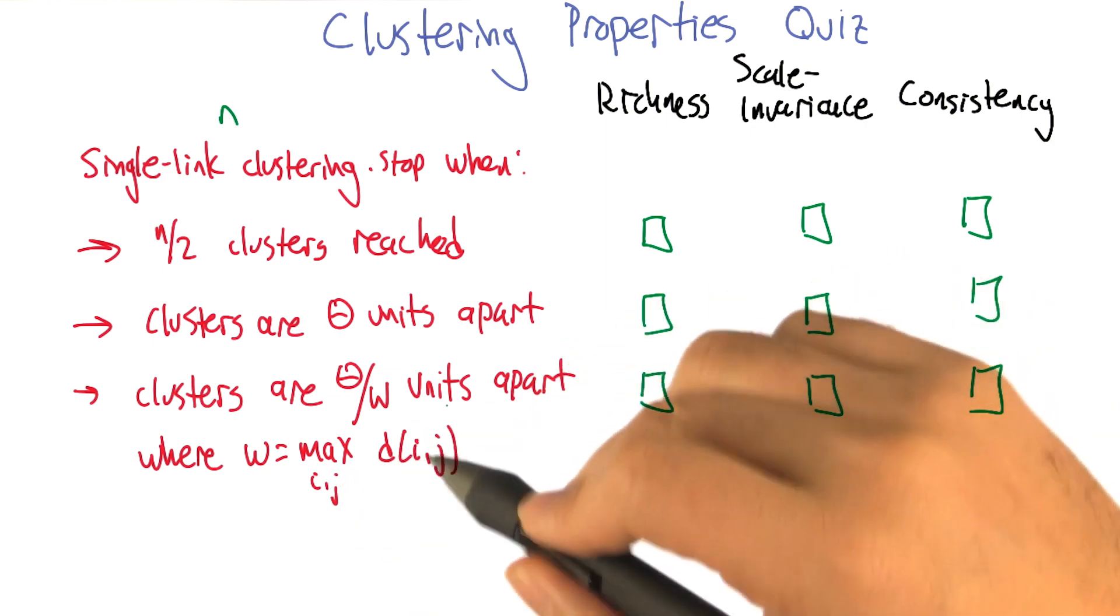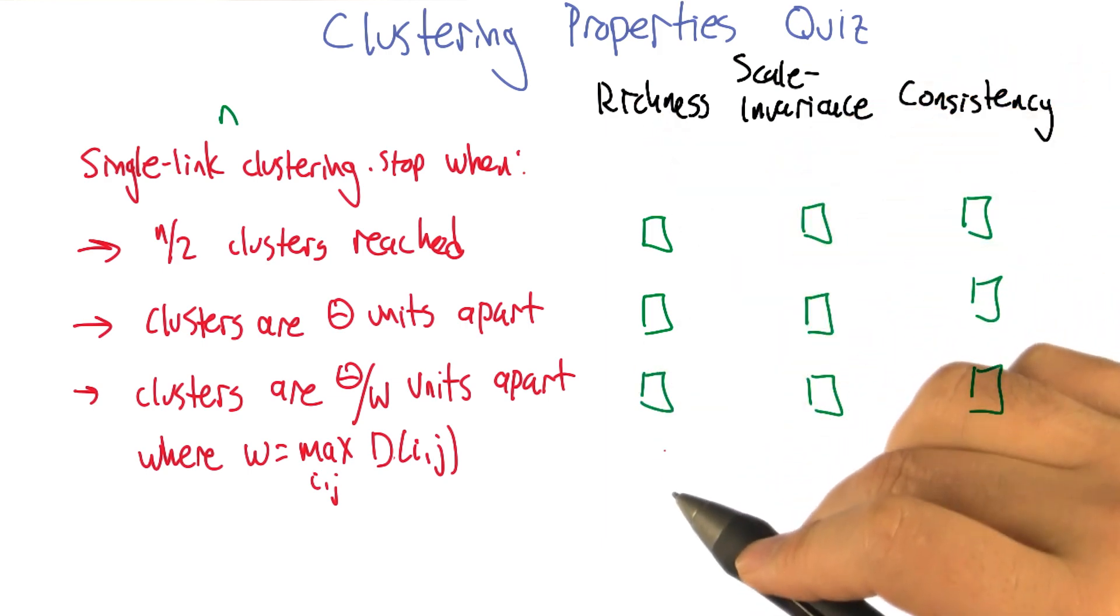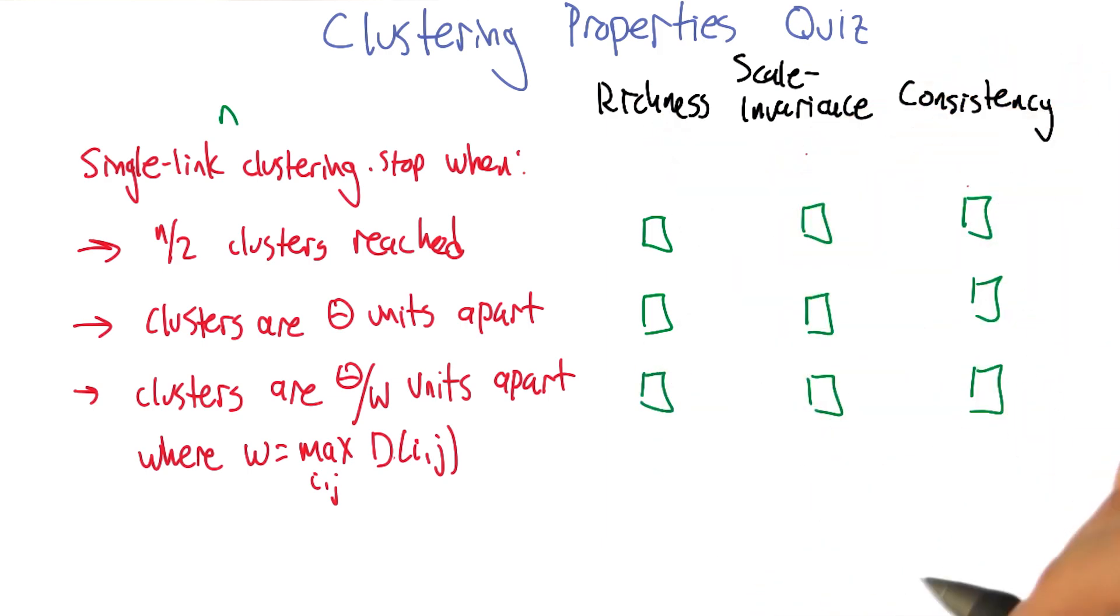Okay. And that's a capital D. At least now it is. Okay. All right. Good. So, if you understand these algorithms, what I'd like you to do is say, which of these have the richness property? Which of them have scale invariants? Which of them have consistency?